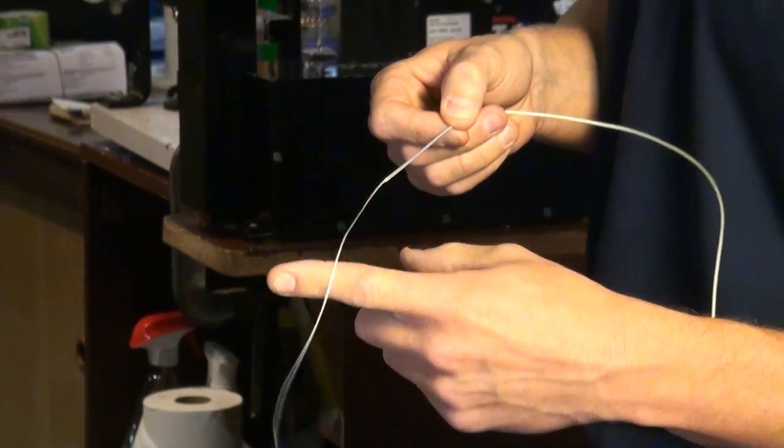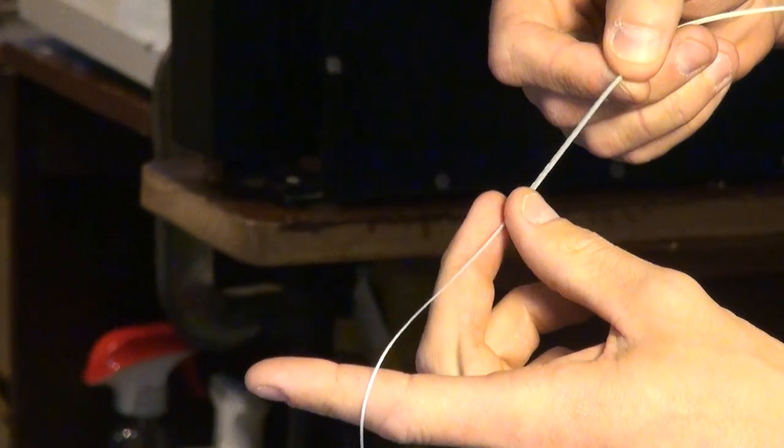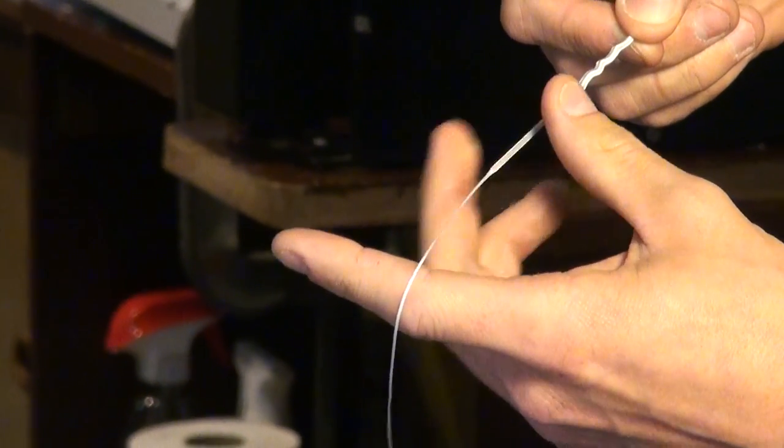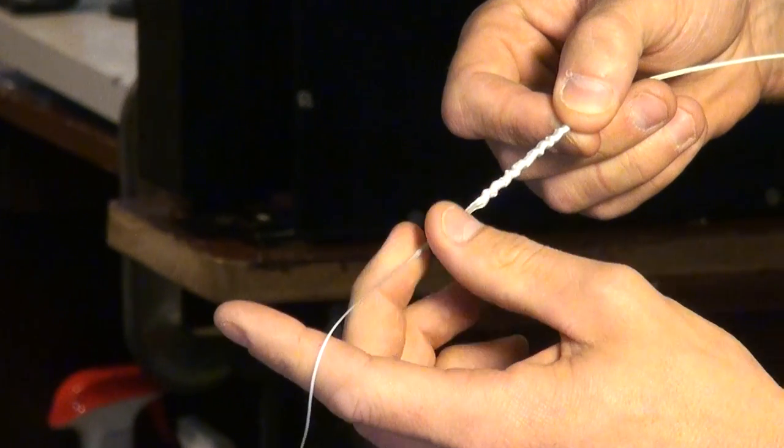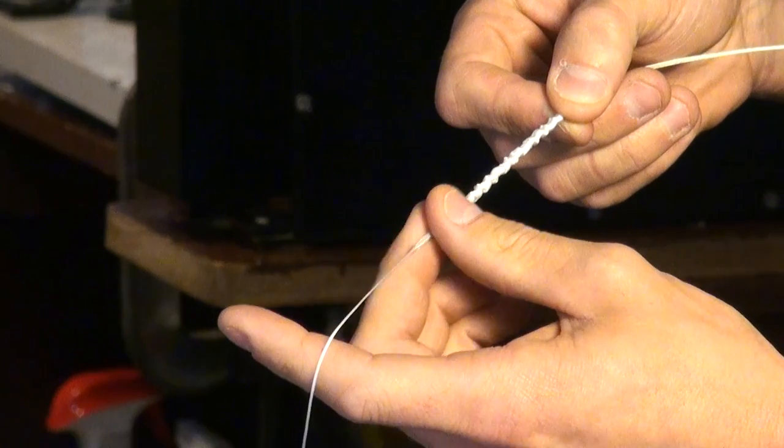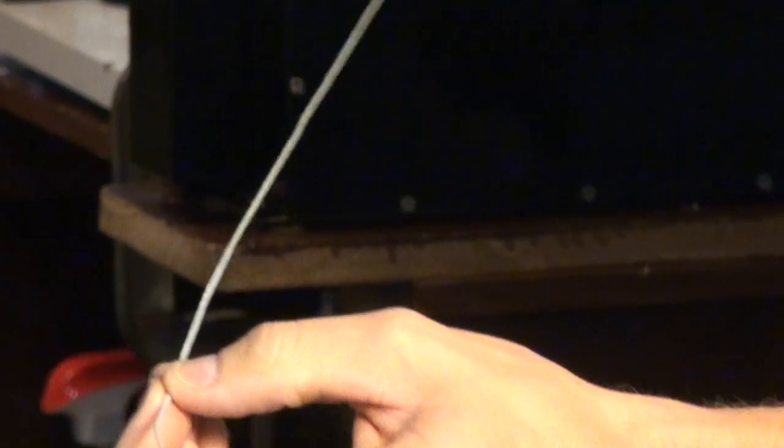I like to use my pointer finger here to get the line straight, to more easily feed that needle through the hollow core. It gives it a straighter path of entry. Then just feed it right back over the monofilament.